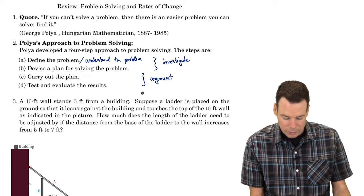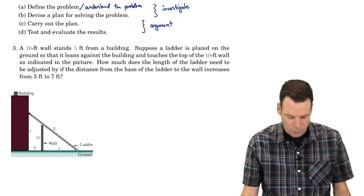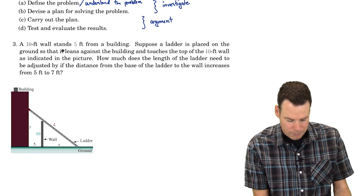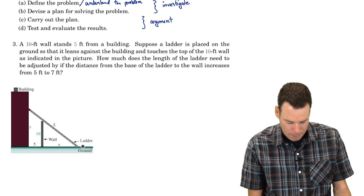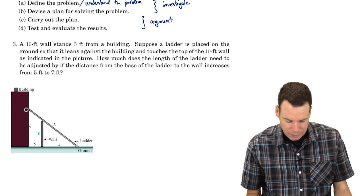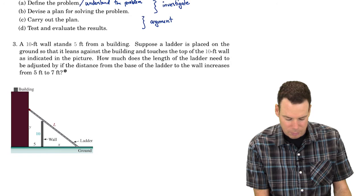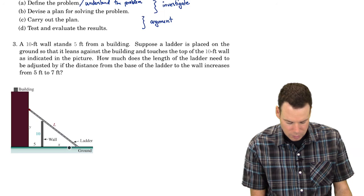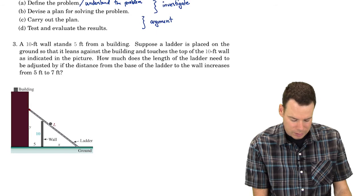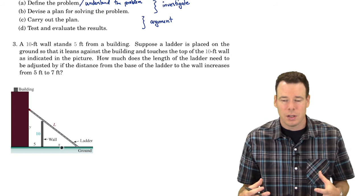So let's look at these four steps in the context of an actual problem. We've got a ten-foot wall that stands five feet from a building. There's a ladder that leans against the building, touches the top of the wall, and also touches the ground. How much does the length of the ladder need to be adjusted if the distance from the base of the ladder to the wall increases from five feet to seven feet? The base of the ladder to the wall is given by the variable X in our diagram.